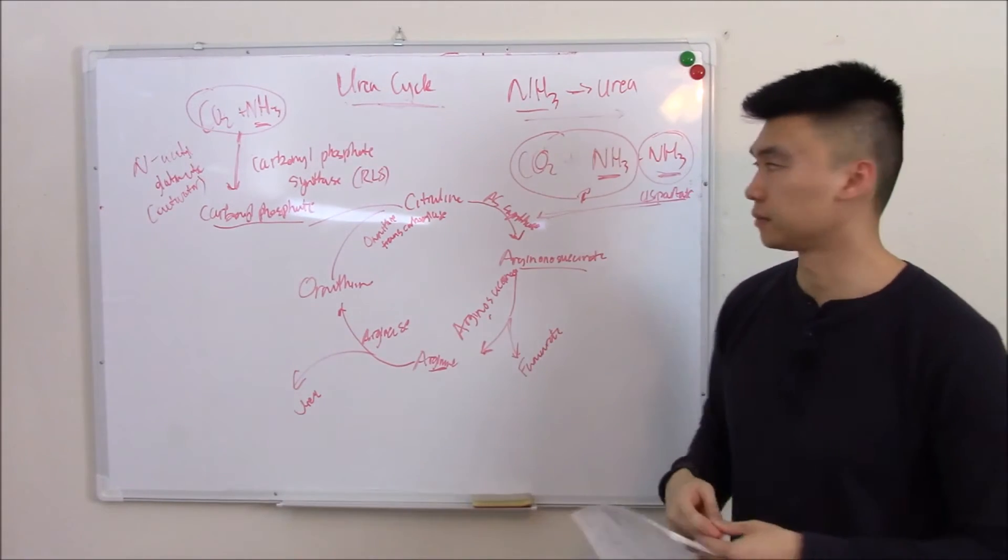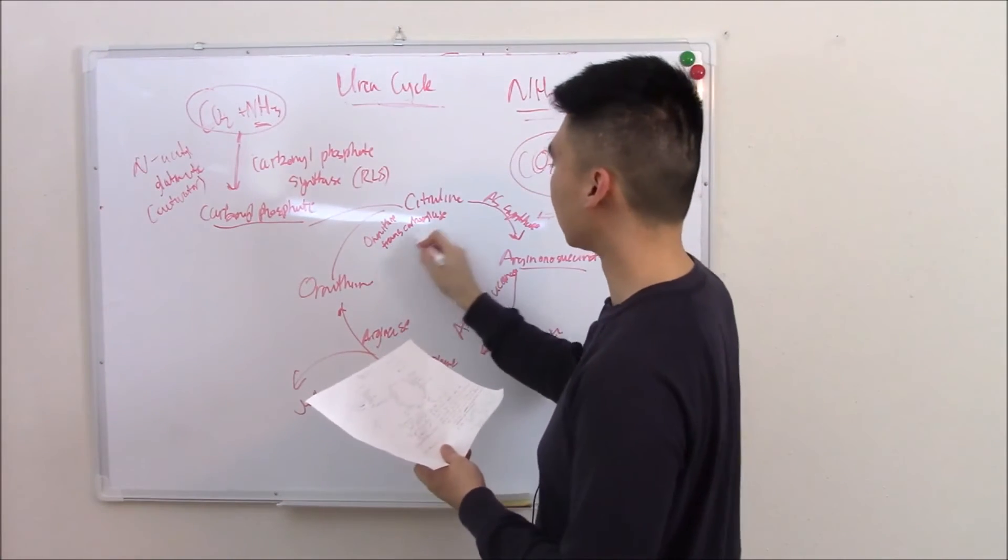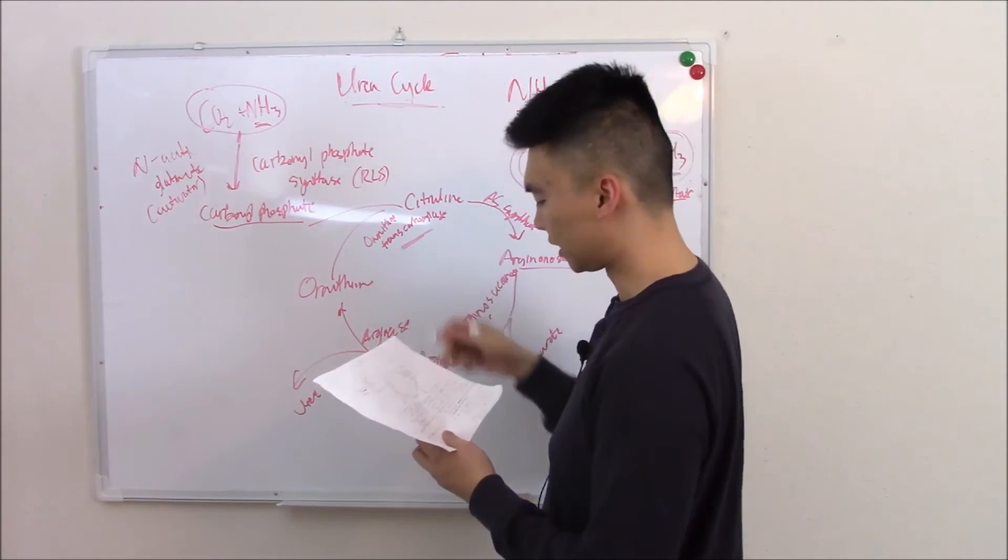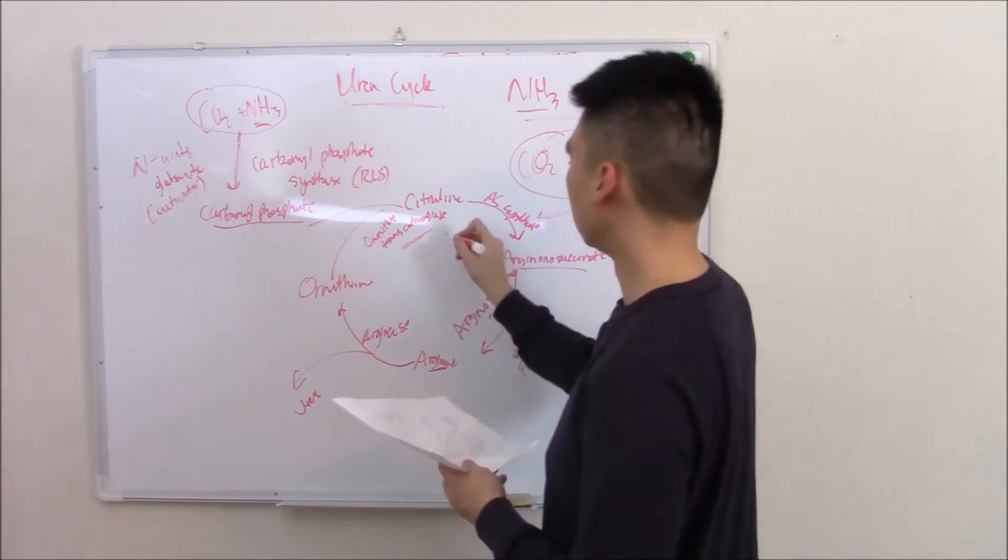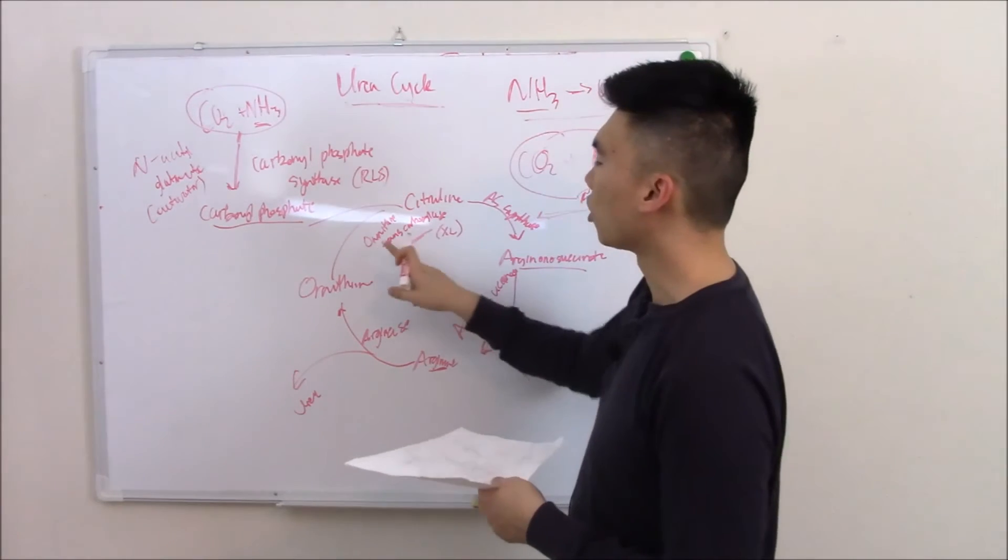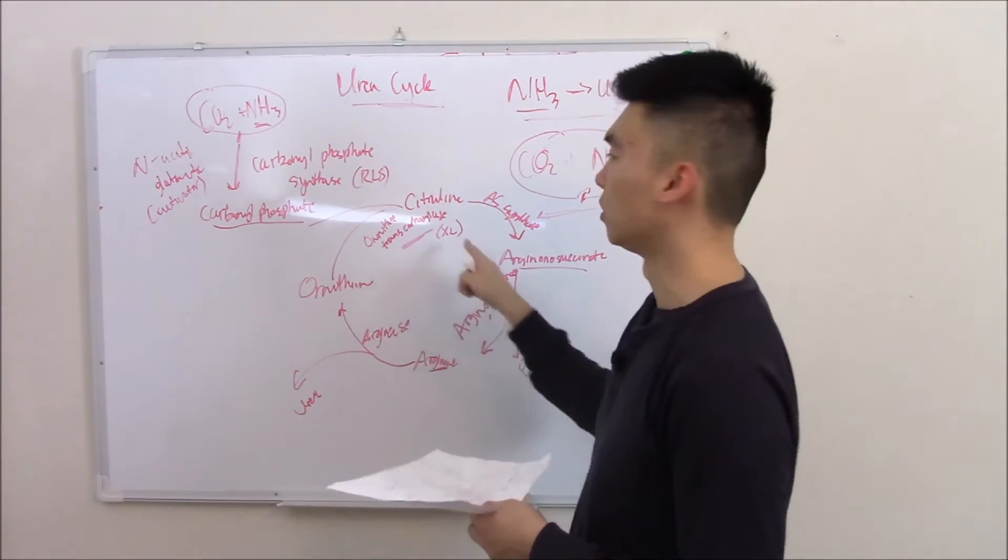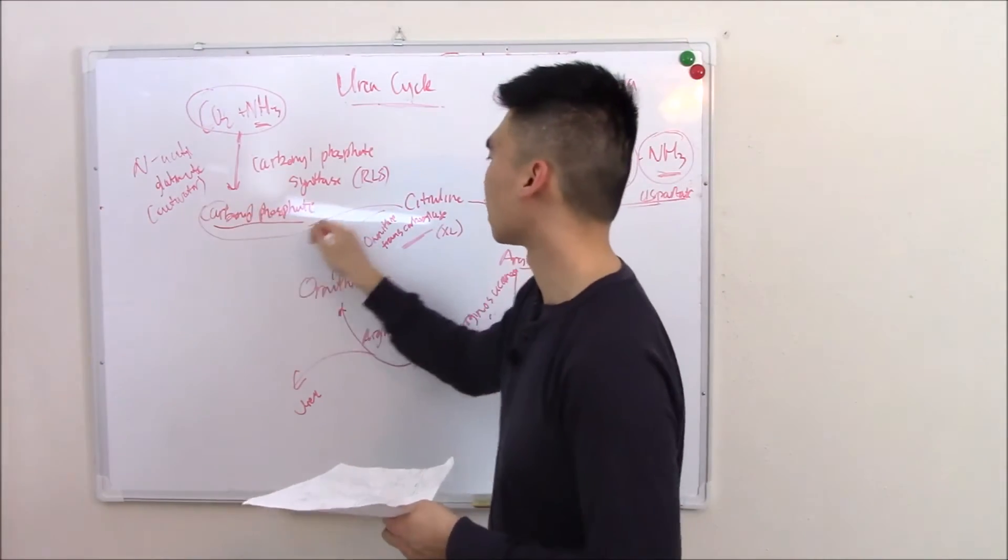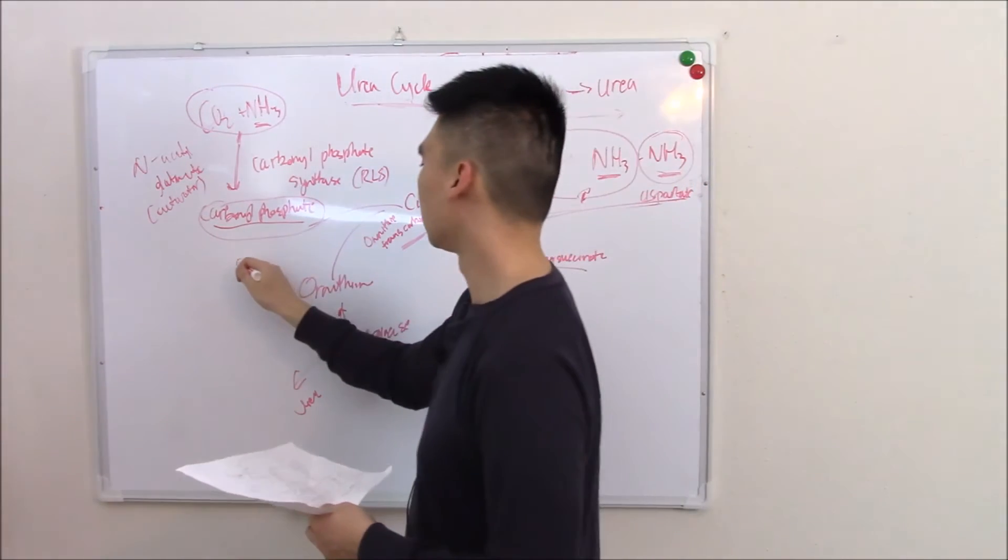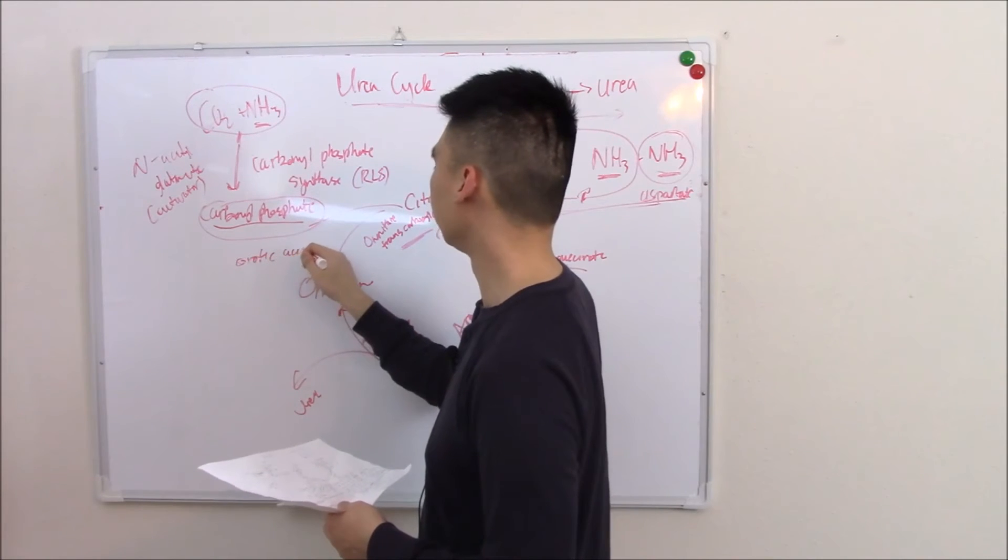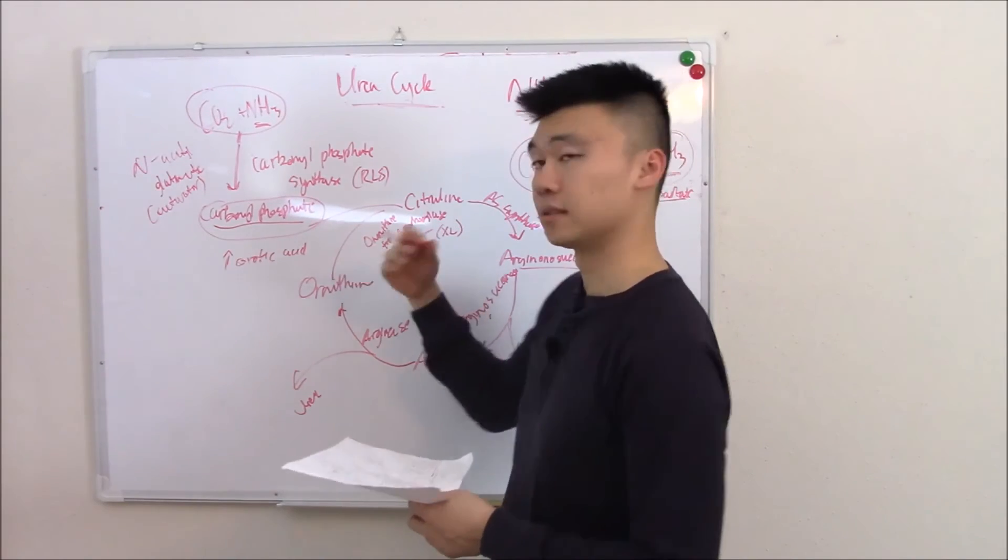Now, what can go wrong? The most common thing that can go wrong is a deficiency in this enzyme: ornithine transcarboxylase. Ornithine transcarboxylase is X-linked. When you don't have this enzyme, you can't bring carbonyl phosphate into the whole loop, so you get a buildup of carbonyl phosphate. You also get a buildup of what it can turn into alternatively, which is orotic acid. So that is ornithine transcarboxylase deficiency.